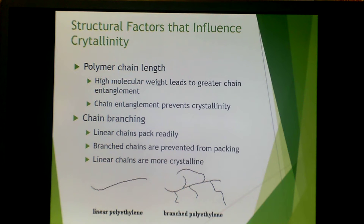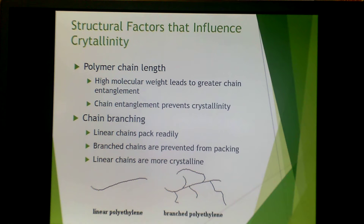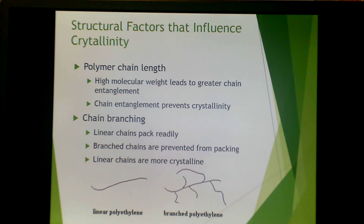There are many structural factors that influence crystallinity. Polymer chain length is one of them — higher molecular weight leads to greater chain entanglement, and a greater degree of chain entanglement can prevent crystallinity. Chain branching is another factor that can reduce crystallinity. Linear chains pack very readily, whereas branched chains prevent this packing. So linear chains tend to be more crystalline, like linear polyethylene HDPE versus branched LDPE polyethylene.